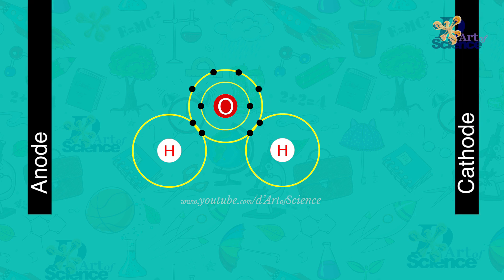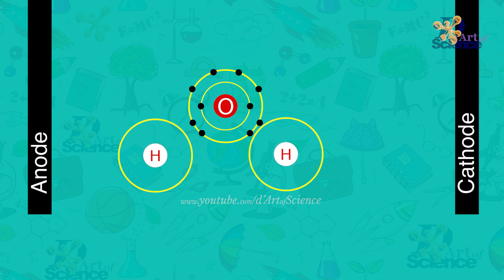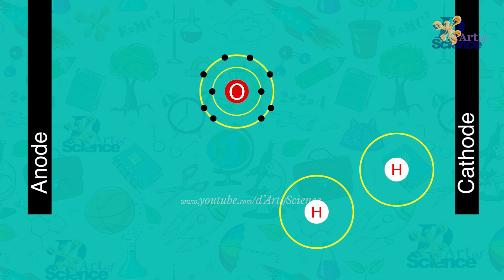Once electricity is passed, an oxidation reaction takes place, where hydrogen atom loses electrons and is left with a positive charge, so it heads to the cathode.